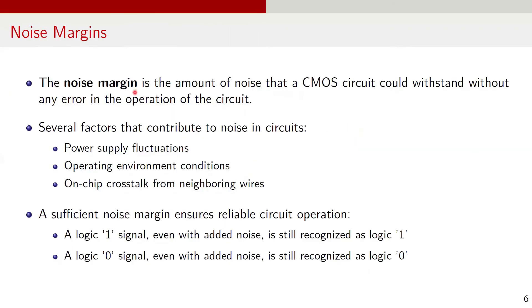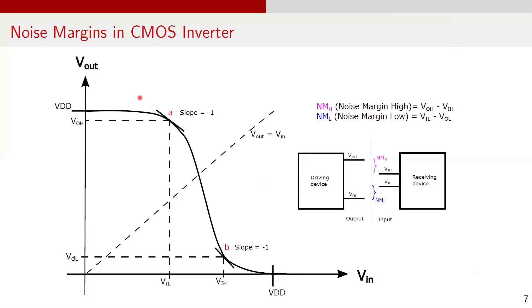For example, noise margins. Noise margin refers to the amount of noise that a CMOS circuit can tolerate without any error in the operation of the circuit. There are several factors that contribute to noise in circuits, for example power supply fluctuations, operating environment conditions, or on-chip crosstalk from neighboring wires. A sufficient noise margin ensures reliable circuit operation by guaranteeing that a logic 1 signal, even with added noise, is still recognized as logic 1, and a logic 0 signal, even with added noise, is still recognized as logic 0. We can calculate the noise margin values for a CMOS inverter using its voltage transfer curve.